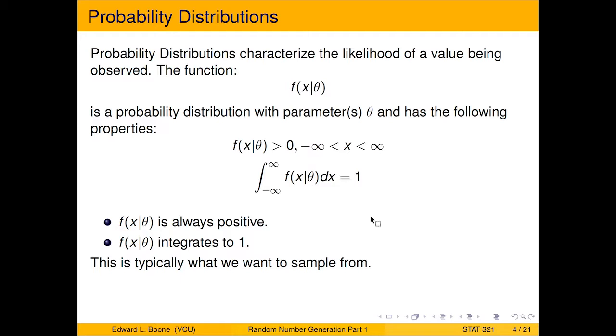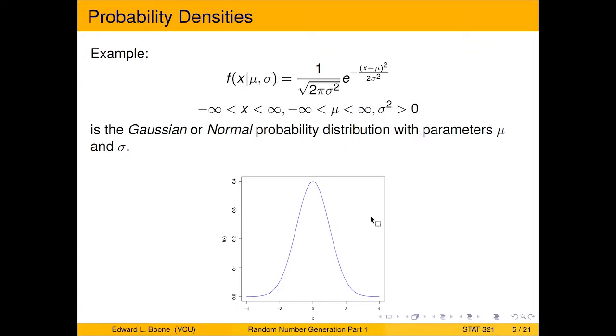And then they integrate to one—always, they will always integrate to one. So that's something that's really important, because probabilities are bound between zero and one. And we actually use probability distributions or these densities to pull out probabilities.